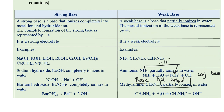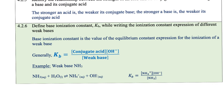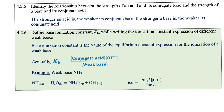H2O is an acid here because it's an H+ donor — it donated an H+. The relationship between acid-base strength and conjugate pairs is very simple: the stronger an acid, the weaker its conjugate base; and the stronger a base, the weaker its conjugate acid. It's an inverse relationship.